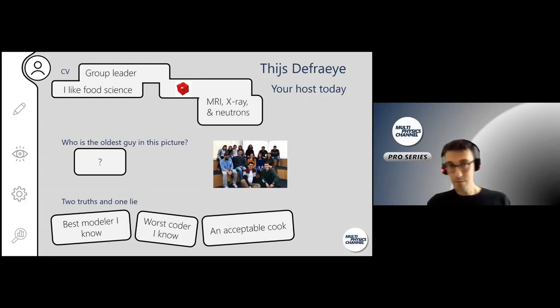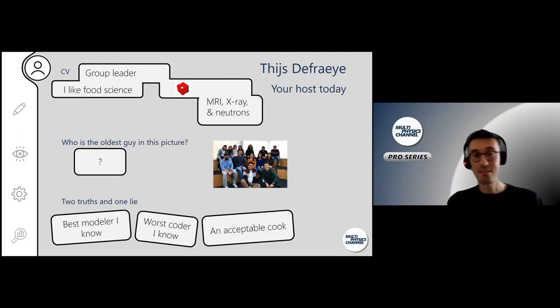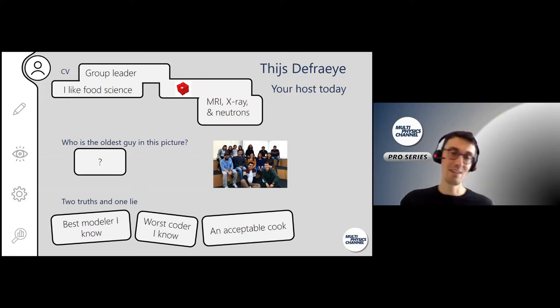I'm a group leader at EMPA. I love to do food science, and although I do a lot of modeling, what some people might not know is that I did a lot of non-destructive imaging in the past, like MRI, X-ray, or neutron imaging. A question to you: single out who's the oldest guy in this picture of our team. And here are three statements: best modeler I know, worst coder I know, or acceptable cook. There's one lie—it's up to you to figure out which one.